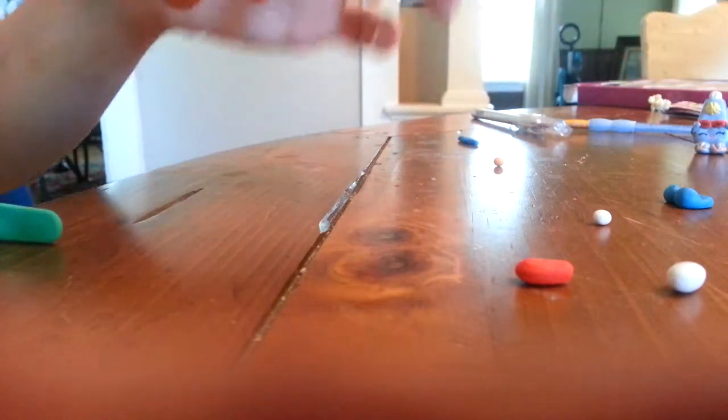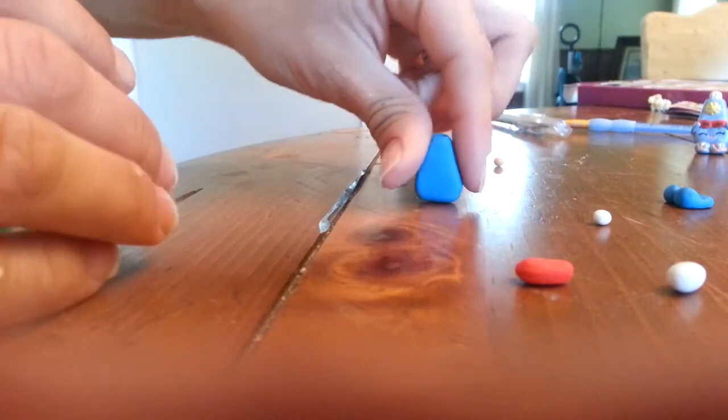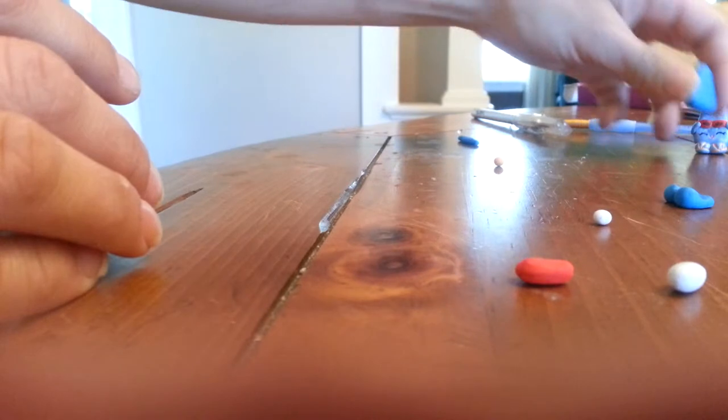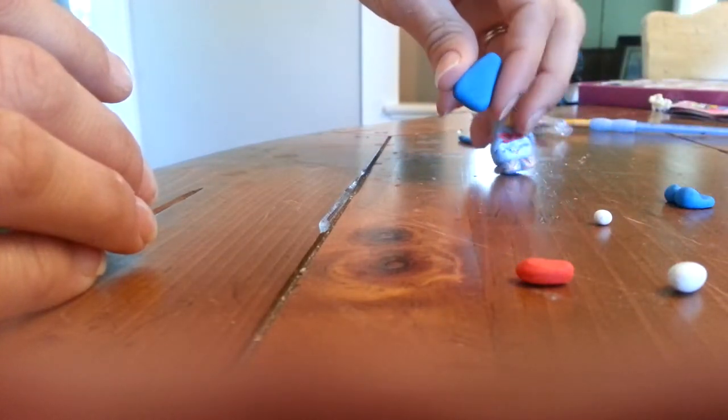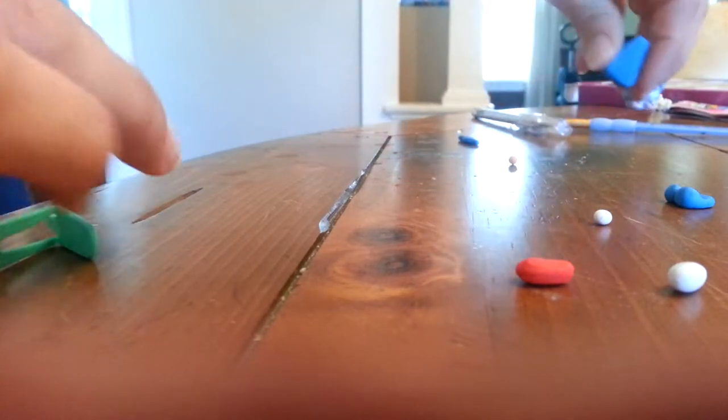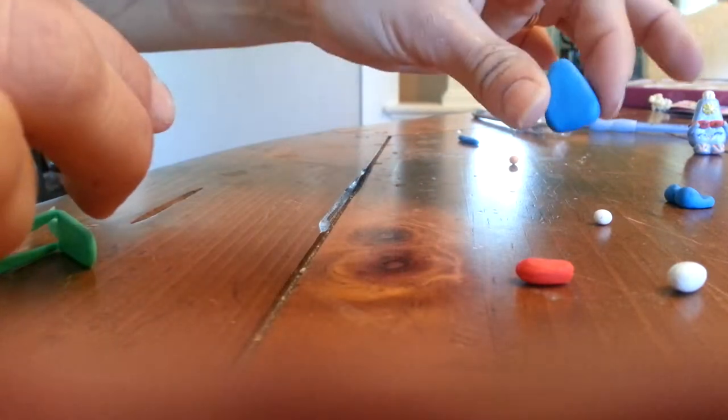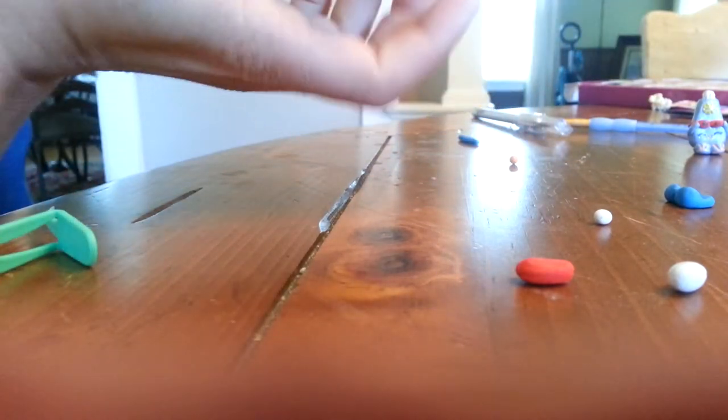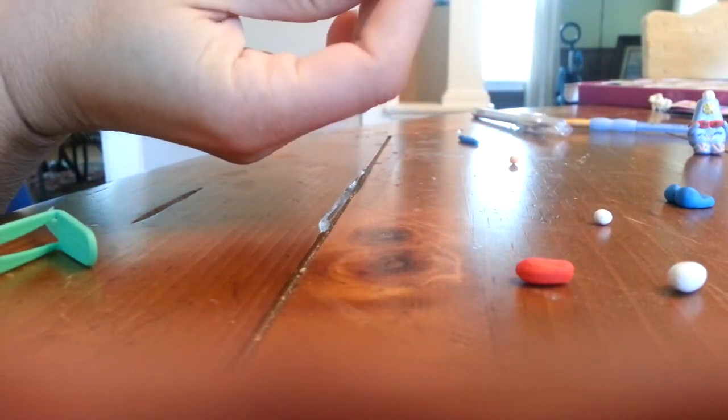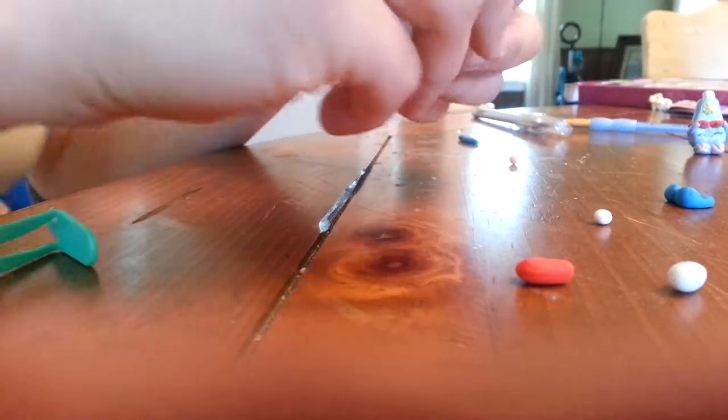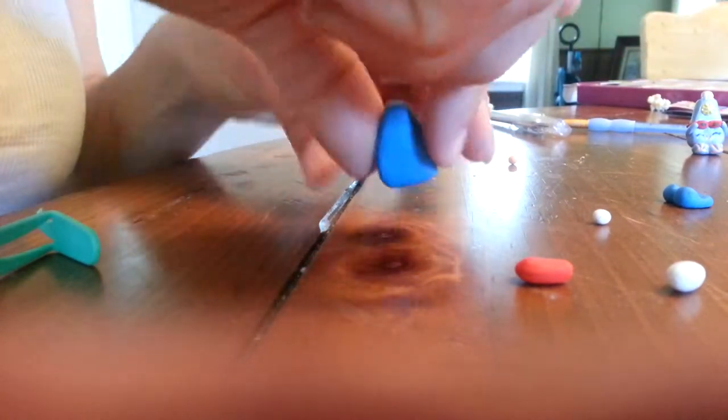Alright, so first you start off with a little ball of clay. That one I made with just plain white clay and I painted it, but I recently bought some colored clay. So I start with a little ball and kind of just work it into kind of a little bottle shape here like that.